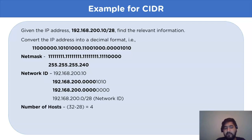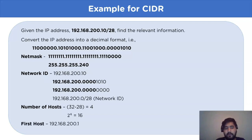Similarly, we can find the number of hosts: 32 minus 28 equals 4, and the total number of hosts would be 2 to the power of 4, which is 16. The first host ID in this given IP address would be 192.168.200.1. With the completion of this example, we have covered all the relevant parts regarding CIDR working.